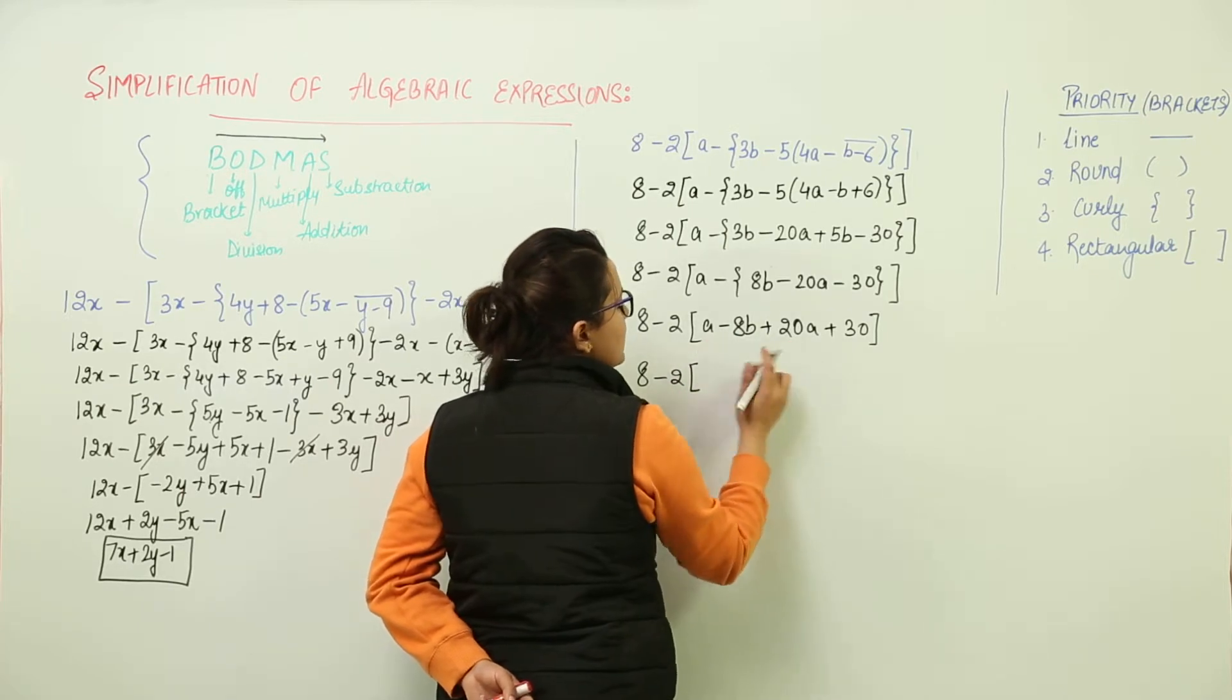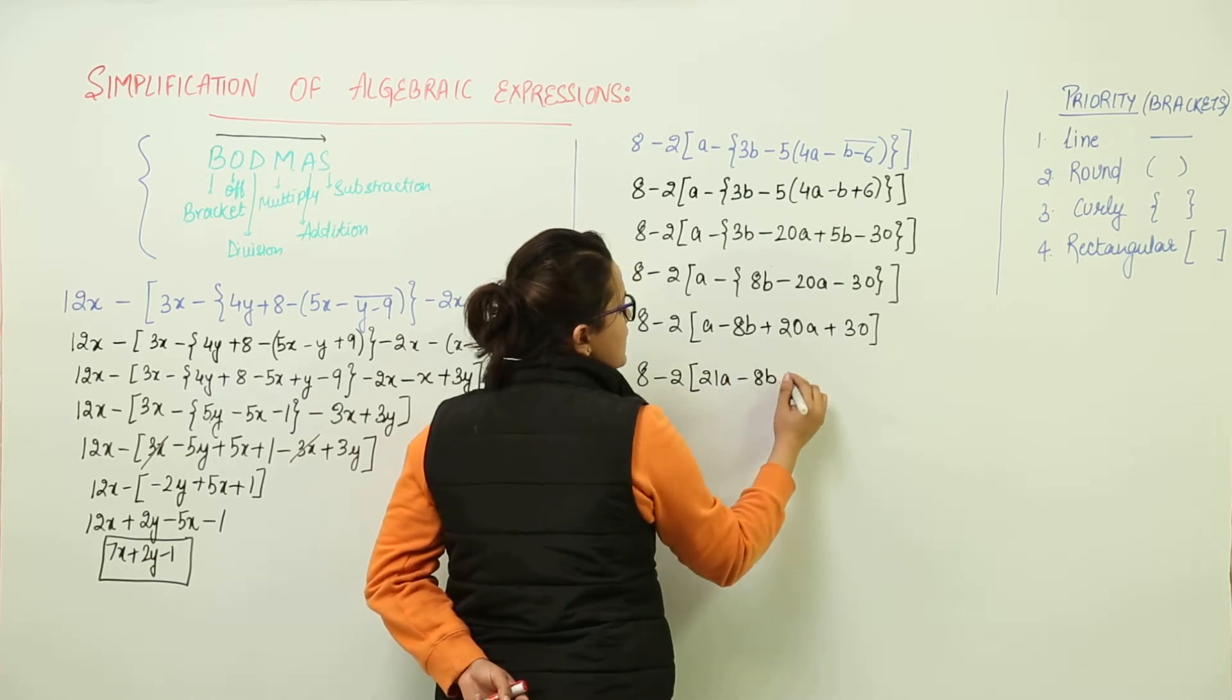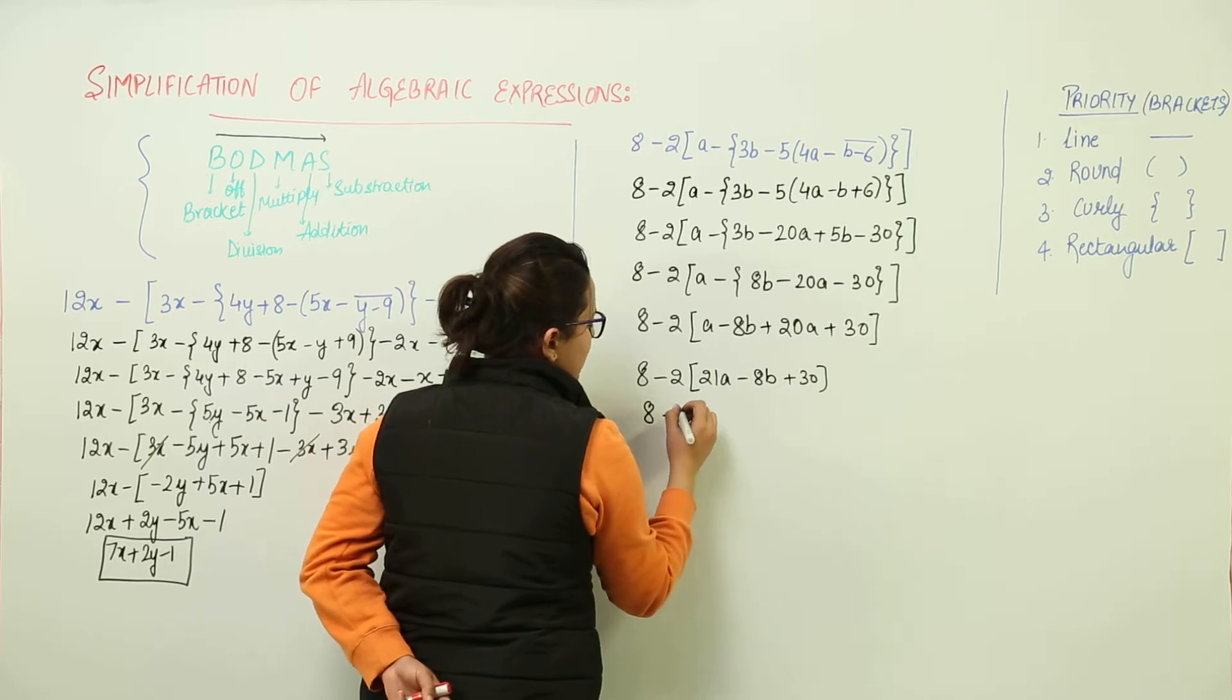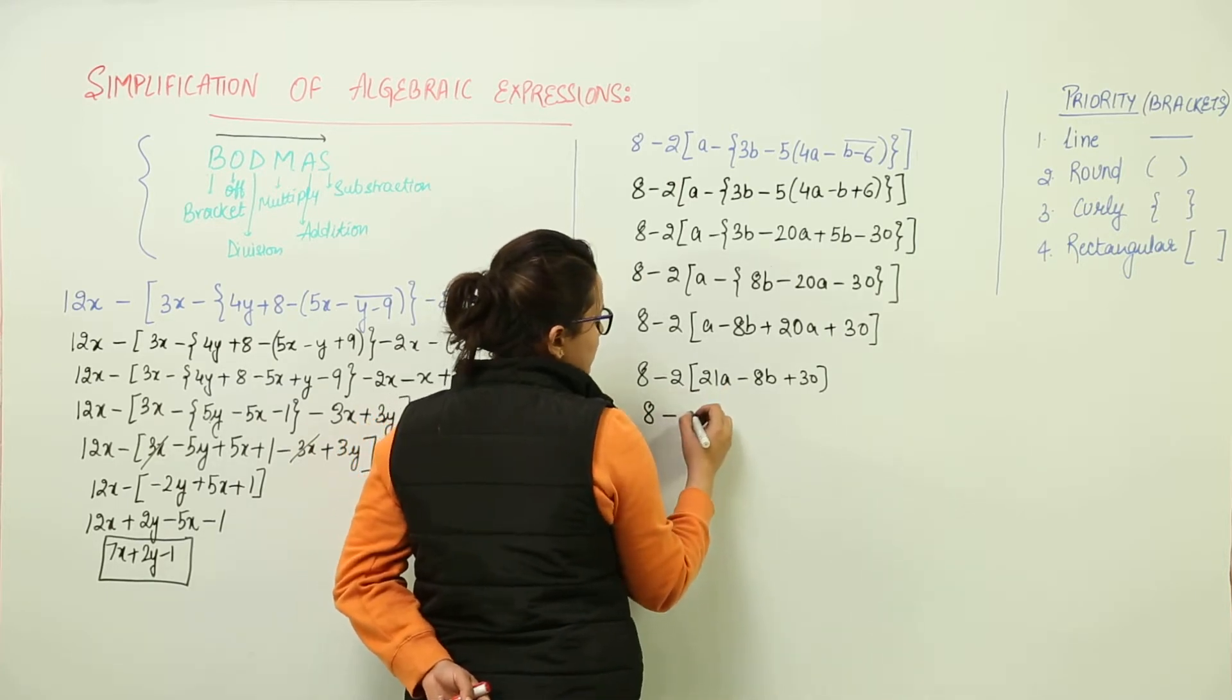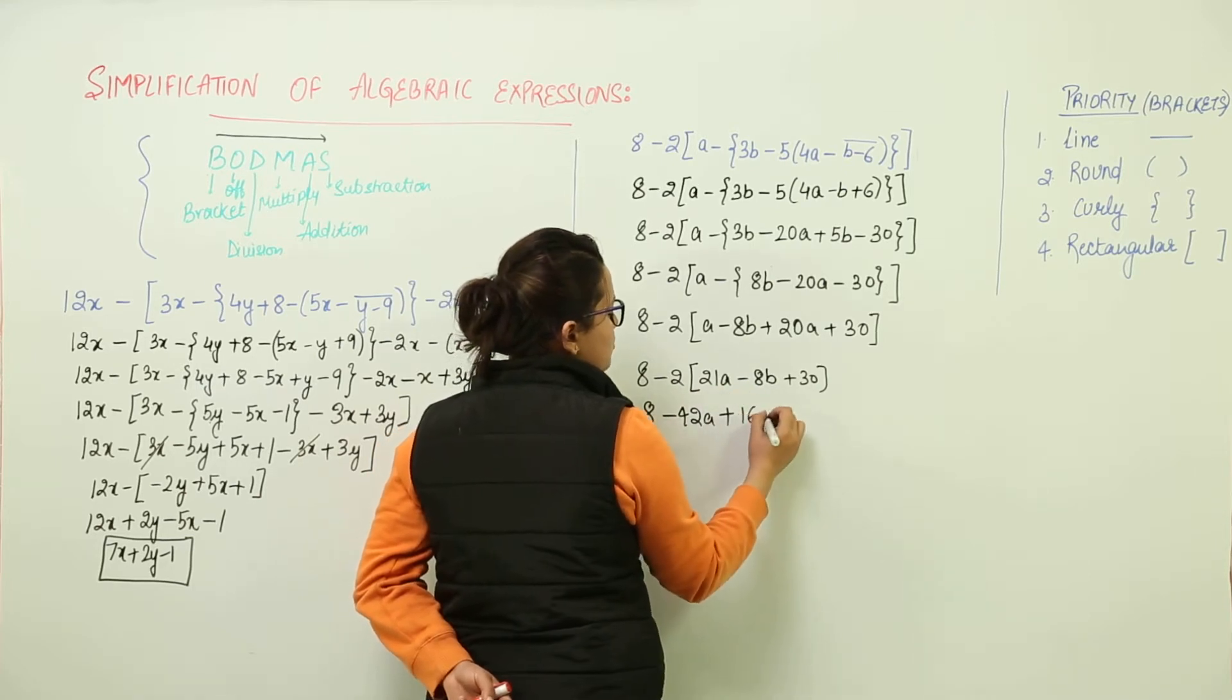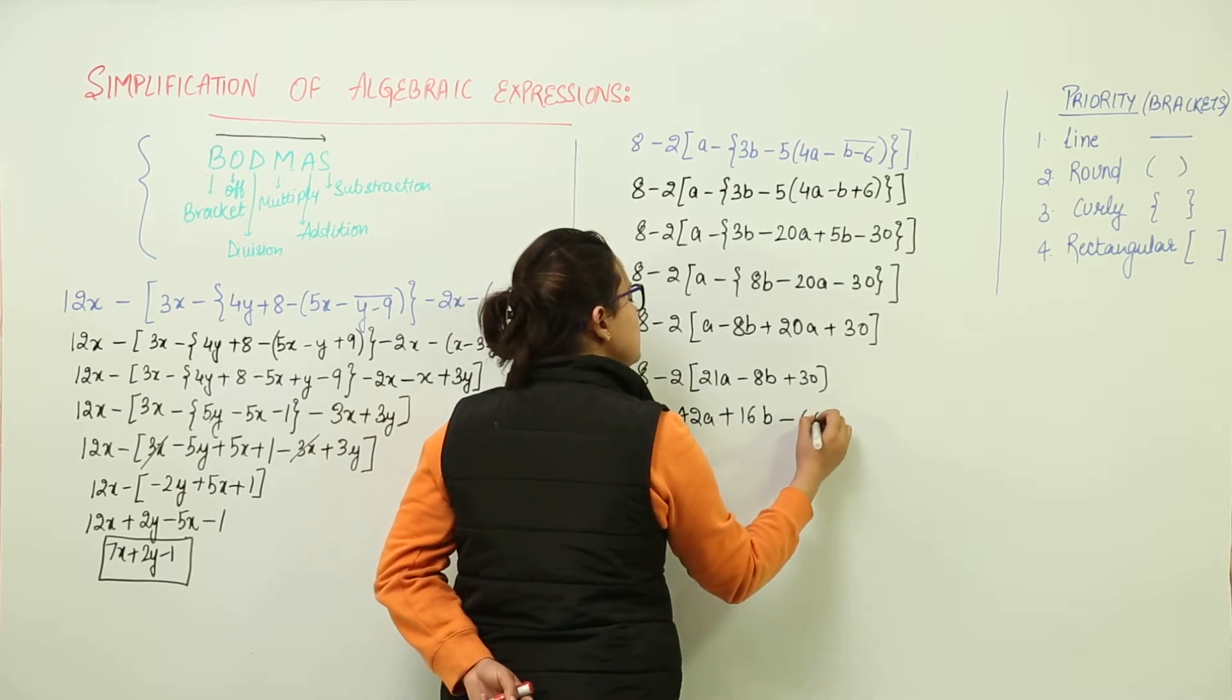What is a plus 20a? That is 21a minus 8b plus 30. So we get 8 minus 2 into 21a. That becomes 42a minus minus plus 2 into 8b. 2 times 8 is 16b. Minus plus minus 2 into 30, 60.